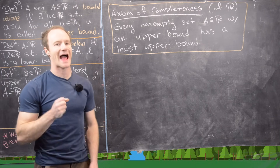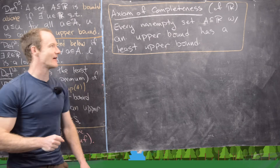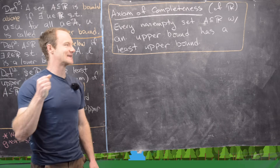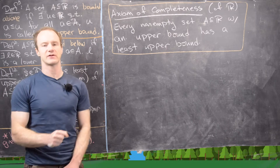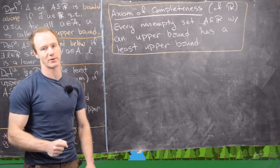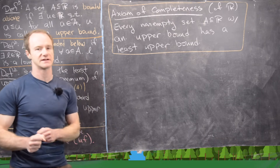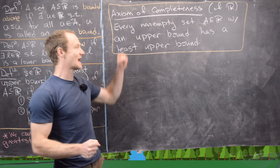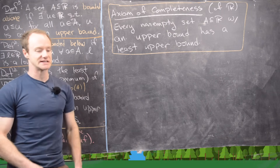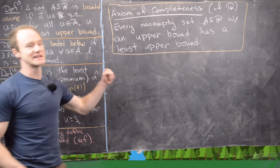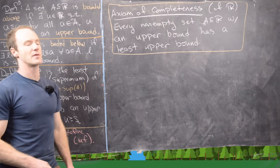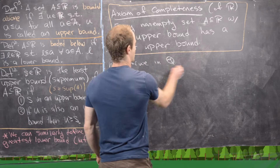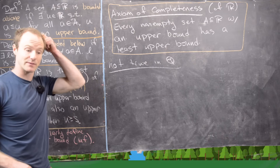Finally, let's look at the axiom of completeness: every non-empty set A of R with an upper bound has a least upper bound. This does not say every subset of the real numbers has a least upper bound — the real numbers themselves and the integers do not. But if a set has an upper bound, then it has a least upper bound. Importantly, this distinguishes R from the rational numbers, because this is not true in the rationals.